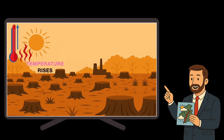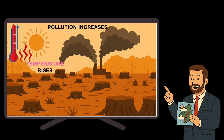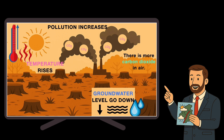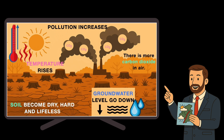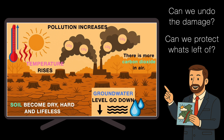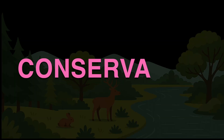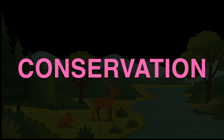In our last video, we explored a big problem — deforestation, the cutting down of forests that destroys homes, ecosystems, and balance in nature. But now the question is, can we undo the damage? Can we protect what's left? Yes, through conservation.